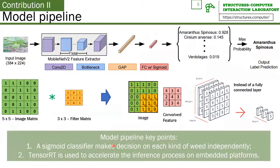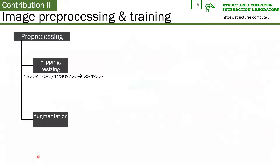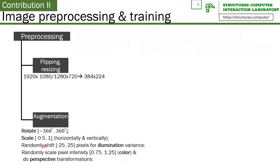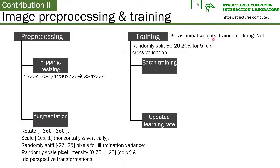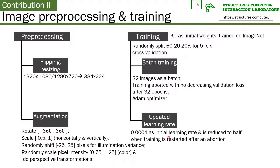For further deployment onto our robot with limited computational power, we use TensorRT to eliminate unnecessary nodes in the network to distill the network and decrease inference time. Before training the model, we pre-processed the images by flipping and resizing them. After that, we augmented the images by rotating, scaling, changing illumination conditions, and doing perspective transformations. We then used Keras and TensorFlow to train our model with cross-validation, and also used a back-training mechanism with an Adam optimizer and adaptable learning rate. This whole model pipeline is our second contribution.